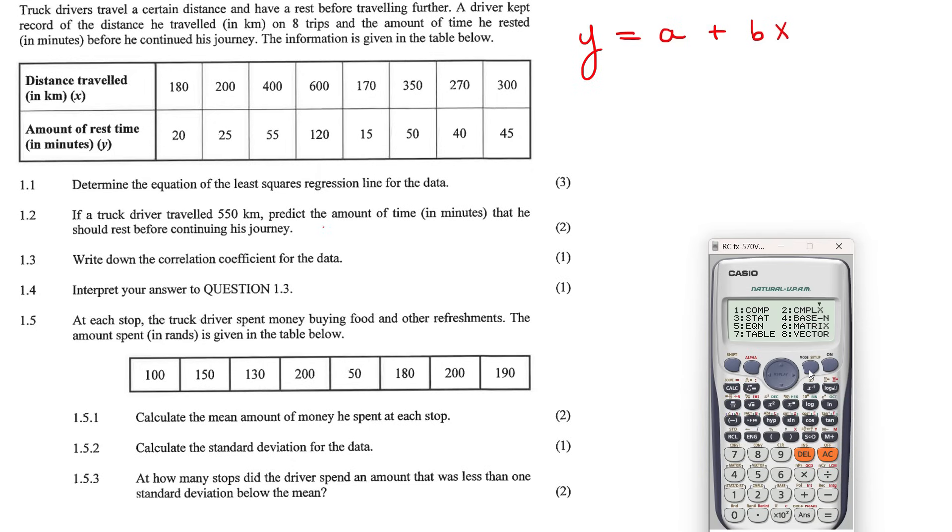Your first step is to put your calculator into stat mode and don't use one minus VAR. That's grade 11 statistics. Use A plus BX and then input the data. So for example, 180, then the next X value, which is 200, then 400. You get the idea. After that's all done, you're going to go to the Y column and start doing the Y values like 20, 25. I'm not going to let you watch all of that.